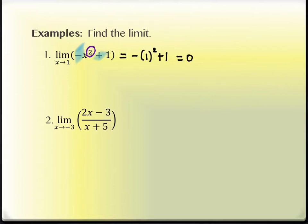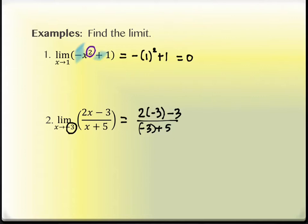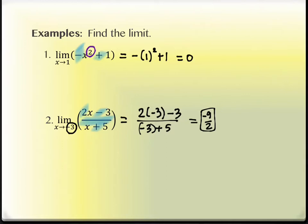Number two is the same sort of thing — we're just plugging the value in. The X value we're approaching is negative 3, so in each location where I have an X I replace it with negative 3. When I clean everything up, I get negative 9 over 2. Properties in play here include a quotient, a difference, a sum, and a scalar multiple — a lot going on behind the scenes that allow us to simply substitute.